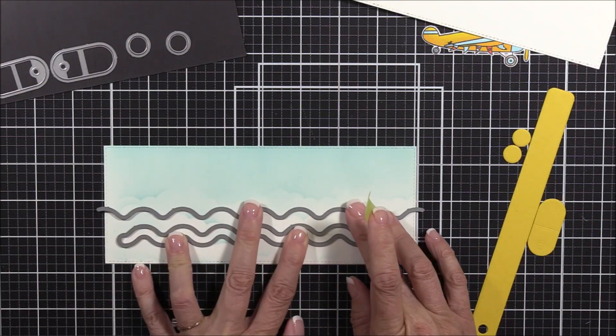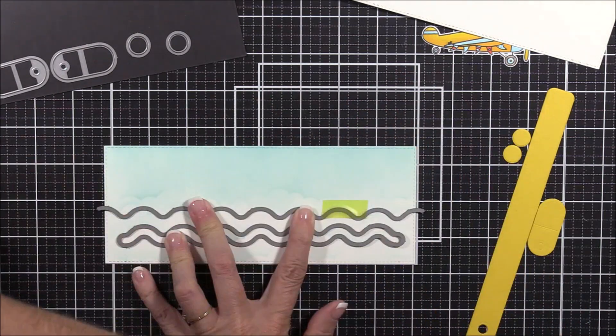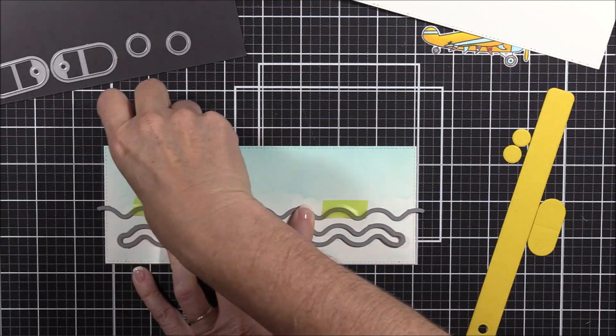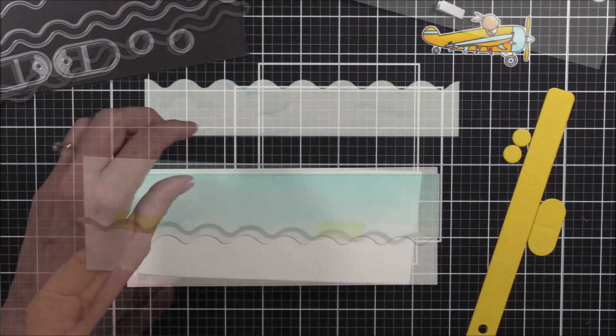Next, I'm aligning the Movin' and Groovin' Slimline Channel and Edge Dies onto the ink blended panel. And once I have them in position, I'll secure the edge die in place with some temporary tape and I'll die cut it off camera.